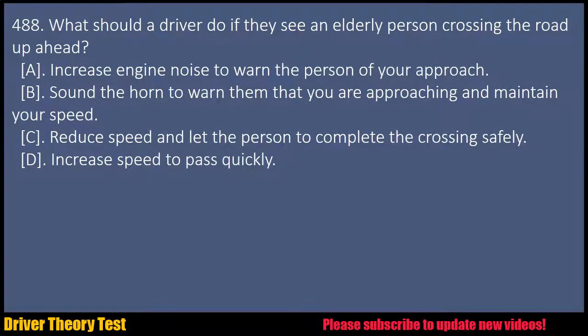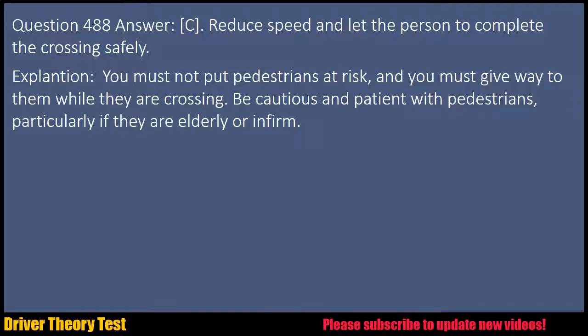Question 488: What should a driver do if they see an elderly person crossing the road up ahead? A. Increase engine noise to warn the person of your approach. B. Sound the horn to warn them that you are approaching and maintain your speed. C. Reduce speed and let the person complete the crossing safely. D. Increase speed to pass quickly. Answer: C. Reduce speed and let the person complete the crossing safely. Explanation: You must not put pedestrians at risk and you must give way to them while they are crossing. Be cautious and patient with pedestrians, particularly if they are elderly or infirm.